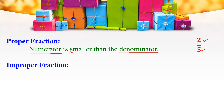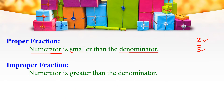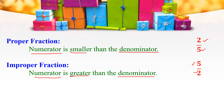Next, Improper Fraction. When the numerator is greater than the denominator, then the fraction is said to be an Improper Fraction. For example, 5 by 2. Here, 5 is the numerator and 2 is the denominator, and 5 is greater than 2. Therefore, the fraction 5 by 2 is called an Improper Fraction.